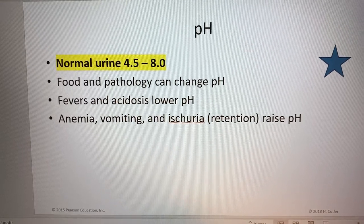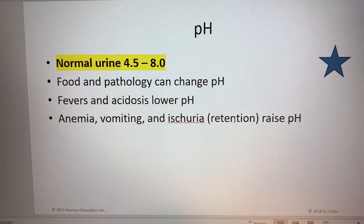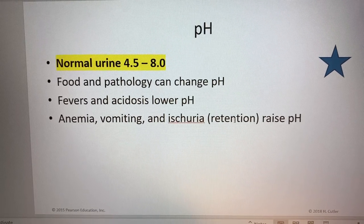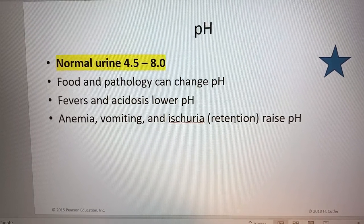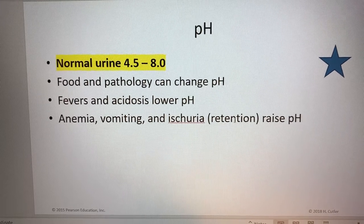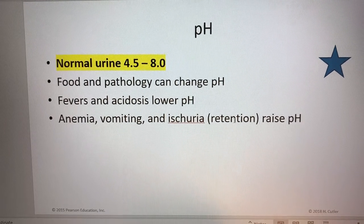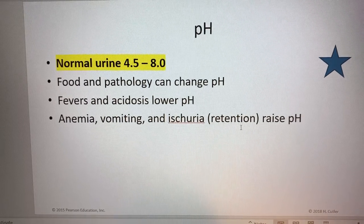Anything you eat, pathologies, hydration status, and things like fevers and acidosis could lower the pH, whereas anemia or vomiting and urine retention, ischuria, could raise the pH or make it more basic.